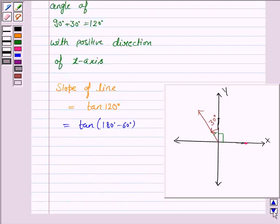That is negative tan 60 degrees. Tan 60 is root 3, so the slope of the line is minus root 3.